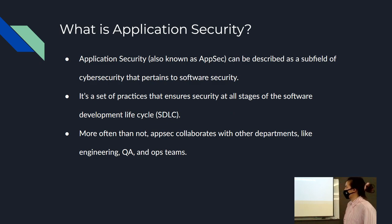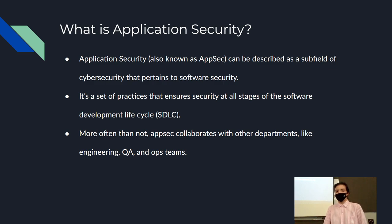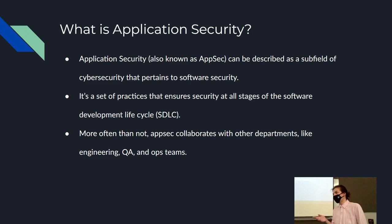Application security, also known as AppSec, can be described as a subfield of cybersecurity that pertains to software security. It's a set of practices that ensures security at all stages of the software development life cycle. AppSec teams collaborate with other departments like engineering, QA, and ops — like SRE, site reliability engineering.